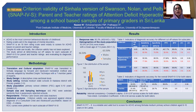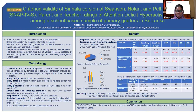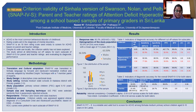Hence, the current study was aimed at determining the cutoff values for each of the subscales of the SNAP-4 score for both raters, and to evaluate the diagnostic performance of the scale as a whole. Initially, the SNAP-4 was translated to the Sinhala language and culturally adapted by a panel of experts in child psychiatry, psychology, and community medicine.